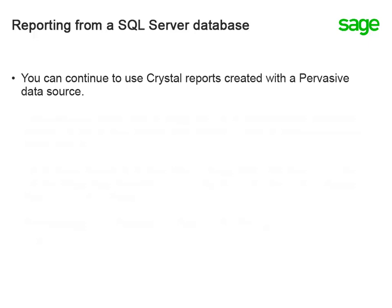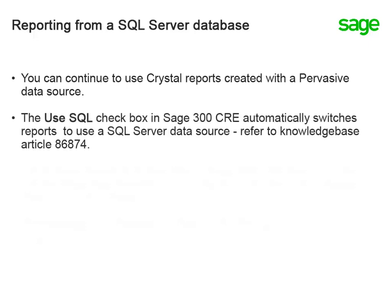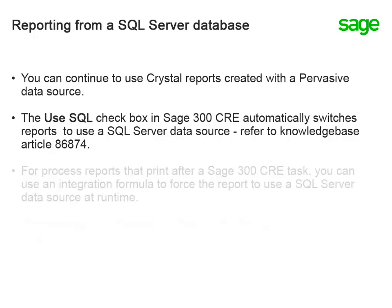For new reports, you can continue to write them using a DSN for your Pervasive data if you want. When you generate these reports in the 300 CRE software, you can check the Use SQL box to automatically switch the source of the data on the report from Pervasive to SQL Server. For more information on how this works, refer to Knowledge Base Article 86874.